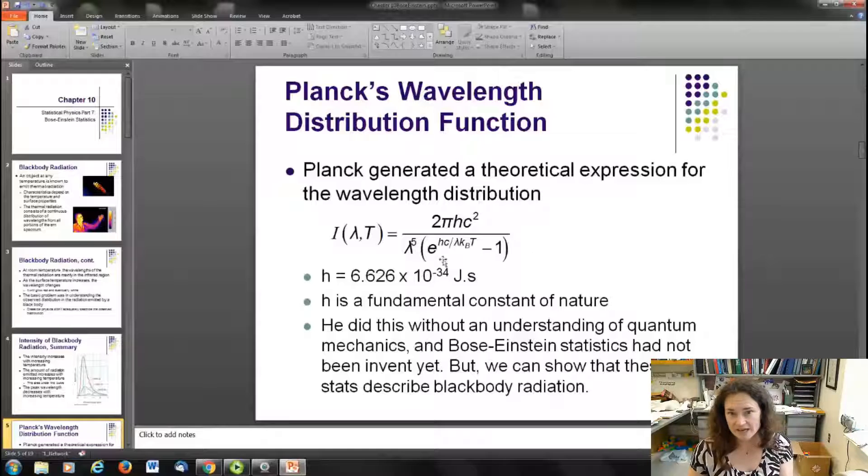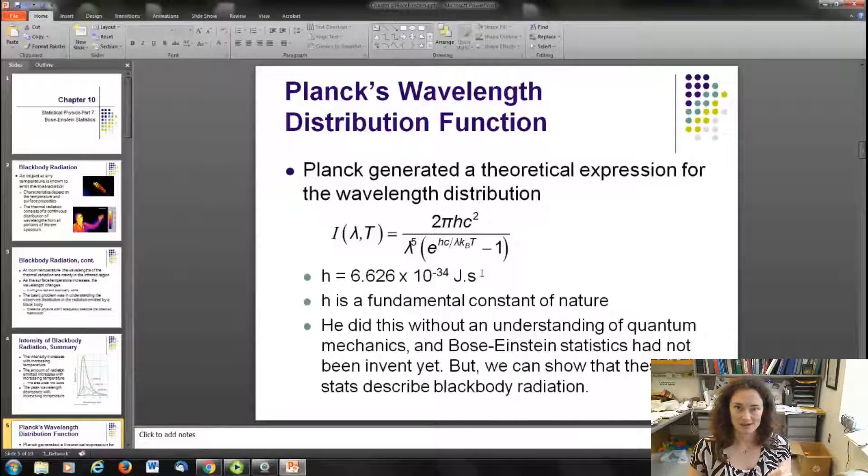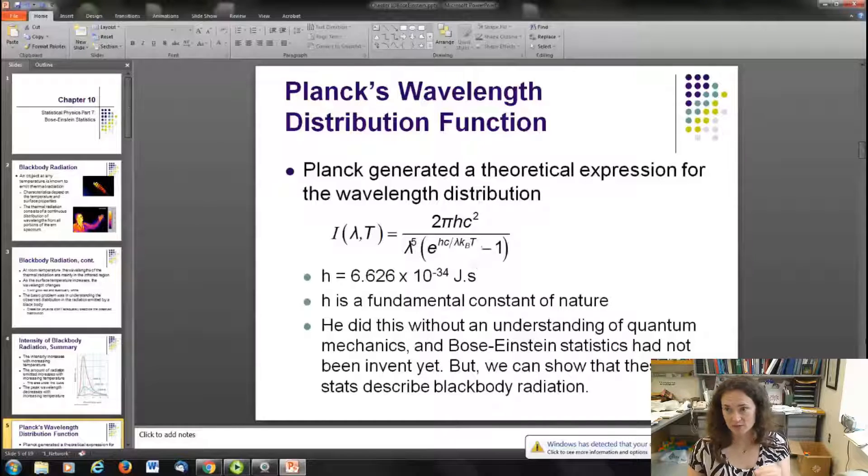So here's our intensity curve. The intensity, which is a function of the wavelength and the temperature, is equal to 2πhc² over λ⁵, e^(hc/λkT) - 1. Now that e^(hc/λkT) - 1 bit should look like the energy of our photon hc/λ, so that's actually e^(E/kT) - 1. And that should look somewhat familiar after the last two lectures, because that's part of our Bose-Einstein statistics distribution function.